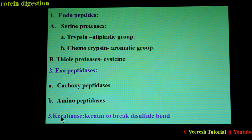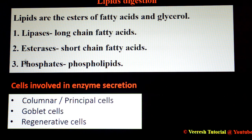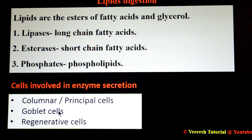For lipid digestion: lipids are esters of fatty acids and glycerol. Enzymes convert lipids into mono- and diacylglycerols for absorption. Lipidases act on long-chain fatty acids, esterases act on short-chain fatty acids, and phosphatases act on phospholipids. Several cell types are involved in digestive enzyme secretion: columnar cells or principal cells are mainly involved in enzyme secretion; goblet cells are involved in maintaining midgut ionic balance, especially in larval Lepidoptera; and regenerative cells are involved in regeneration of columnar cells.